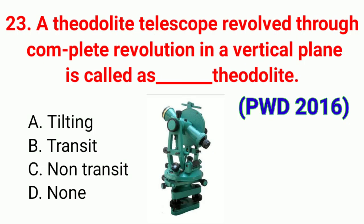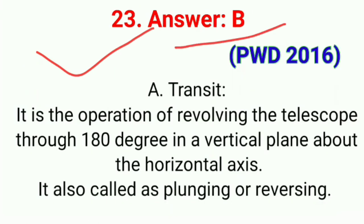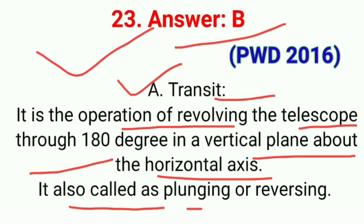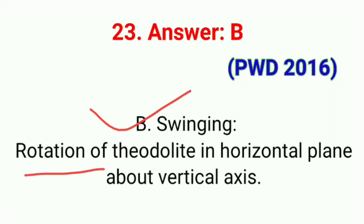Question number twenty-three: A theodolite telescope revolved through a complete revolution in a vertical plane is called a dash theodolite. The correct answer is option B, transit theodolite. Transit is the operation of revolving the telescope through 180° in a vertical plane about the horizontal axis, also called plunging or reversing. Swinging is the rotation of the theodolite in the horizontal plane about the vertical axis.